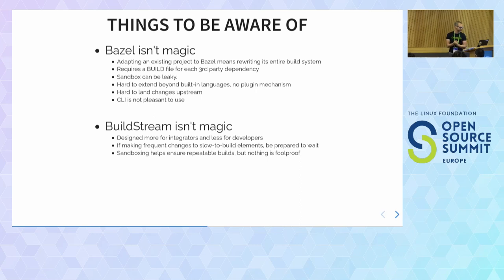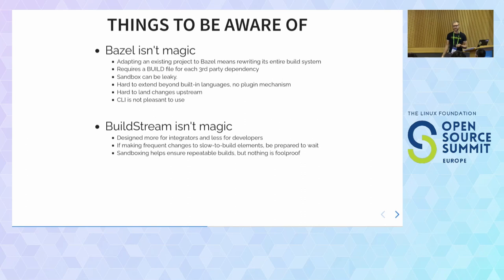Of course, BuildStream isn't magic either. The sandboxing can never be perfect — the aim is to guide your builds toward reproducibility, ideally bit-for-bit reproducible. But nothing is foolproof. If you want to implement a random number generator in your build based on the time of the git commit, you can, and there's nothing we can do to stop that. So it's a guide to making reproducible builds, but it can never be perfect.